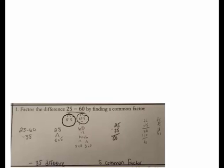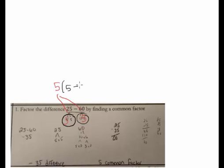Now this student did a really nice first step. He said 25 was 5 times 5 and 60 is 12 times 5. Believe it or not, that's all we need to do, because there is a common factor of 5. The student found that, and from what we learned last week, if you have a common factor of 5, you can pull it out and whatever is left over you keep. That would be 5 times 5 minus 12, and we're done with the problem.